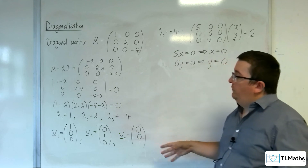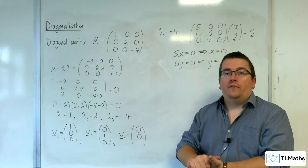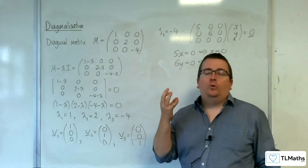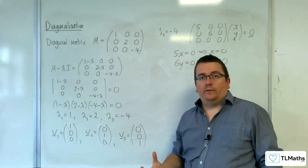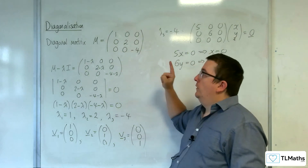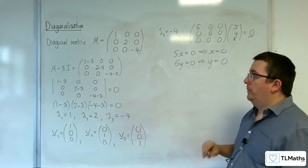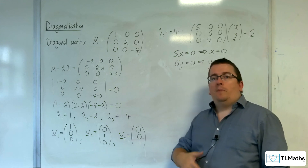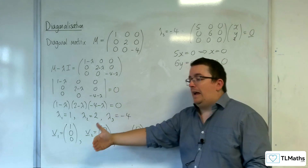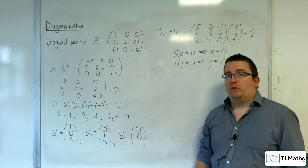Moving forward, a matrix that has a full set of eigenvectors will be closely related to the diagonal matrix that is made of its eigenvalues. This is just an example to show you what a diagonal matrix is doing behind the scenes with its eigenvalues and eigenvectors. In general, a matrix and the diagonal matrix of its eigenvalues are closely related, and we're going to be exploring that in this section.